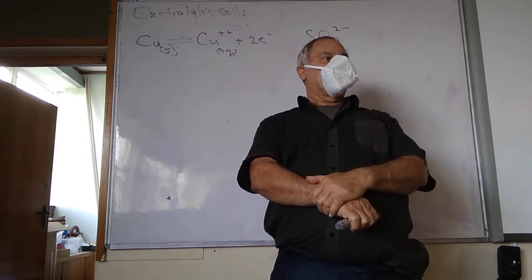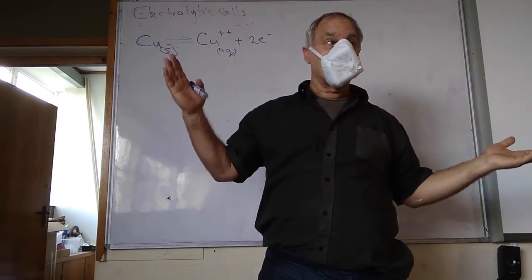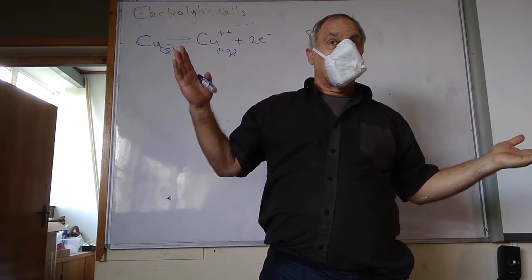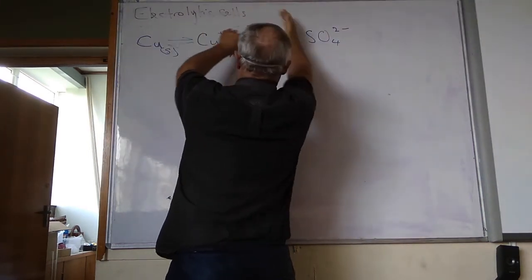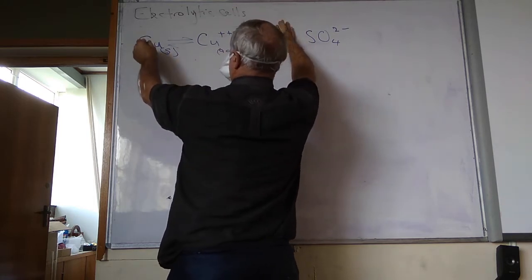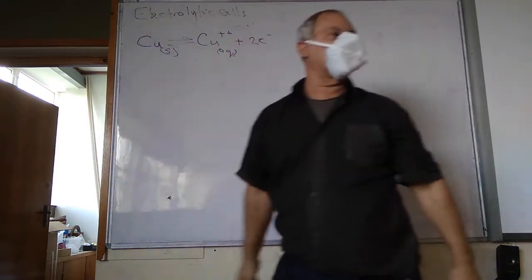So what will happen if I remove electrons from the system? Which direction will it go? Remember, all of these are in the system, you can't separate them, they're all touching each other. But we can remove electrons, then what will happen?